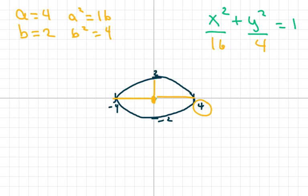And you have your ellipse. You have your equation. c is going to be, c squared equals a squared minus b squared. So c squared is 12.